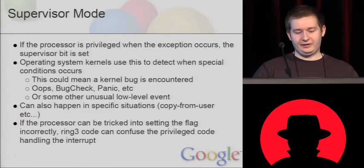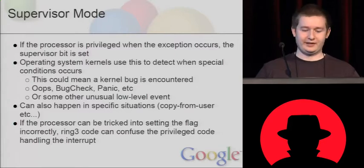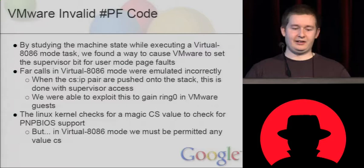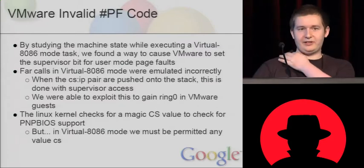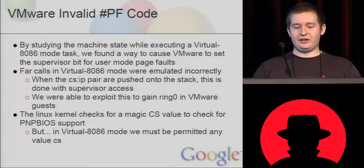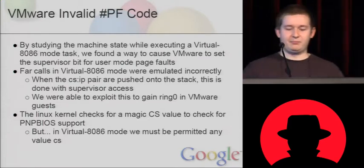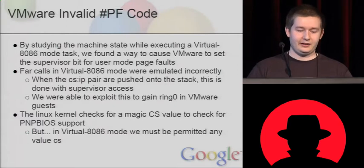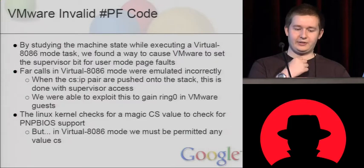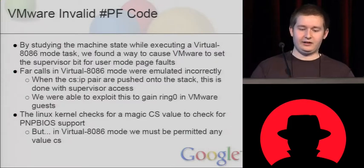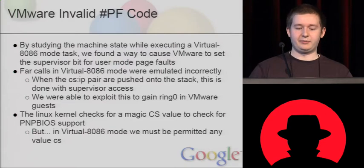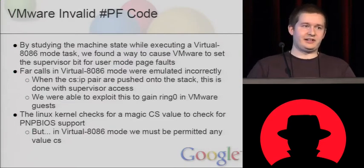If the supervisor bit is set, it could mean a kernel bug was encountered — you'd expect an oops on Linux or a bug check on Windows — or some other unusual low-level event, such as a normal copy_from_user operation. By looking at this code, we realized that if the processor can be tricked into setting these flags incorrectly, you can confuse a lot of really privileged core operating system code. We came up with a way to do this: by studying machine state while executing a virtual 8086 mode task in a VMware guest, we found a way to make VMware set the supervisor bit for an unprivileged page fault. The problem was, if you do a FAR call in virtual 8086 mode, it was emulated incorrectly — the CS and IP pair pushed onto the stack is done with supervisor access.